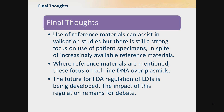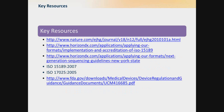Where reference materials are mentioned, there is a large focus on cell line DNA over plasmids, particularly with the New York State Department of Health guidelines. The future for FDA regulations is still being developed and the impact remains up for debate. However, it is important that the FDA public consultation takes full consideration of the opinions of clinical laboratories to make sure that this is least burdensome but also relevant to the patient and the future of healthcare. Key resources include a free paper from Nature covering many requirements for next-generation sequencing validation.